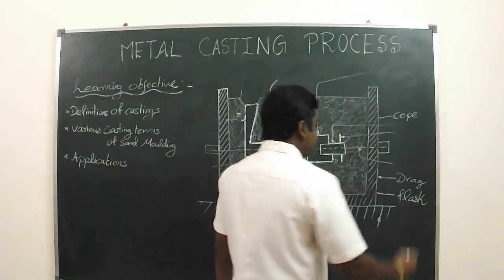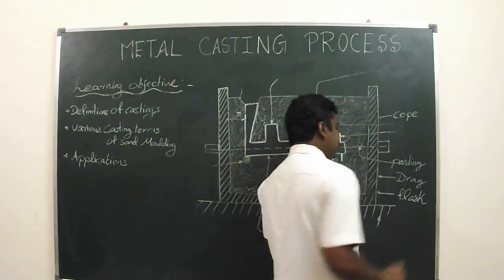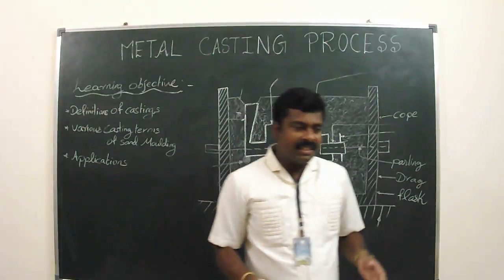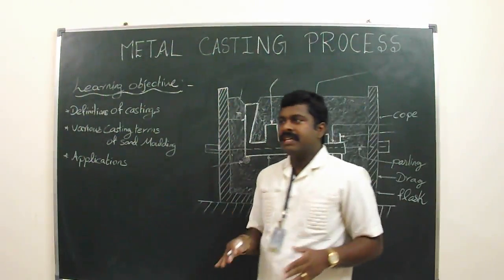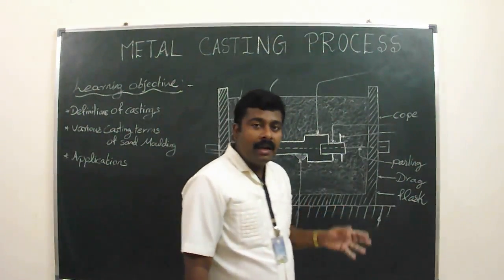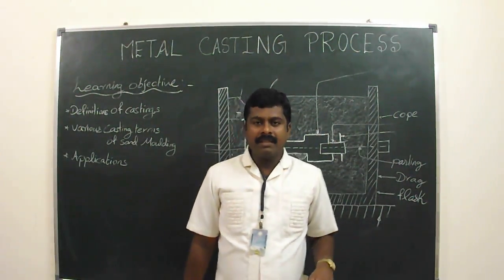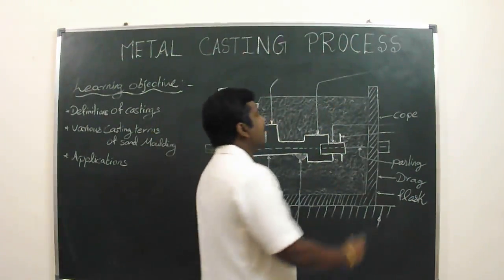Next one is the parting line. Parting line is the dividing line between the molding flask, which is the parting sand spread over it when we use the split pattern. Next one is the pattern. Pattern is the replica of the final object, and the mold cavity is made with the help of pattern.